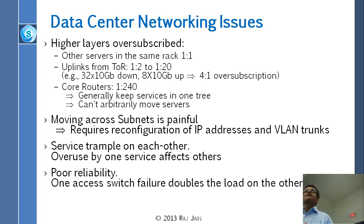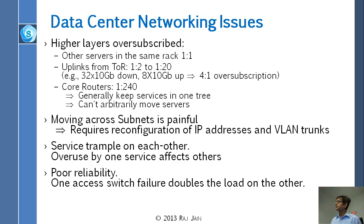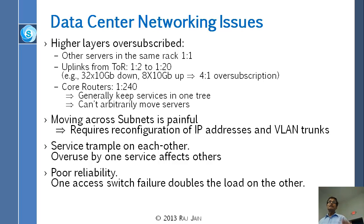Whatever traffic is coming from below, more traffic is coming in and less going out — that ratio is called over-subscription. For example, you might have 30 times 10 gigabit down, only 8 times 10 gigabit up, giving you 4-to-1 over-subscription. Core routers are 1-to-240 over-subscribed, meaning if you have a core router, there might be 240 servers two tiers underneath, each at 1 gigabit, but the core router has only maybe 1 gigabit out.